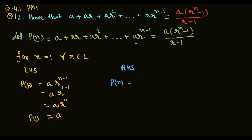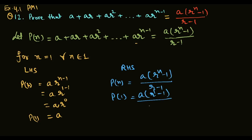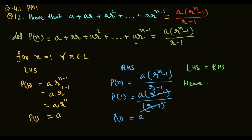Now RHS solve करते हैं। Pn = a(rⁿ - 1)/(r - 1) में n = 1 put करेंगे। P1 की value आएगी a(r¹ - 1)/(r - 1)। यह cancel हो जाएगा और P1 = A आएगा। So we can say that LHS = RHS, hence P1 is true for n = 1, where n belongs to natural number.